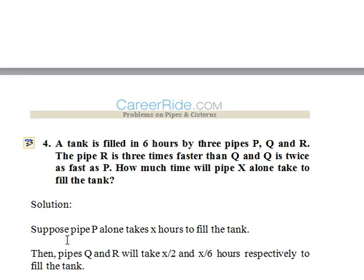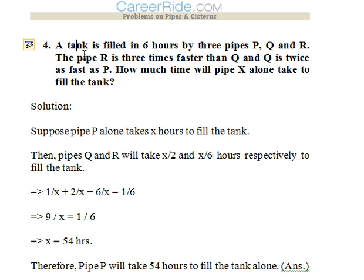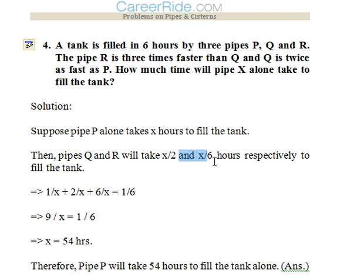Fourth question: a tank is filled in 6 hours by 3 pipes P, Q, and R. Pipe R is 3 times faster than Q, and Q is twice as fast as P. We don't know the alone time taken by P, so we would assume pipe P's time to be x hours. Since Q is twice as fast as P, the time taken by Q would be x/2. For R it would be x/6.